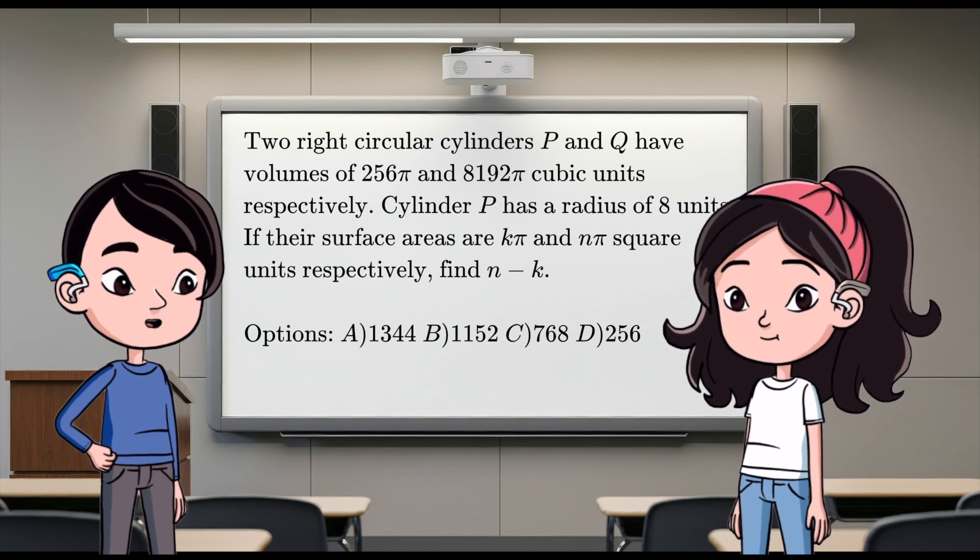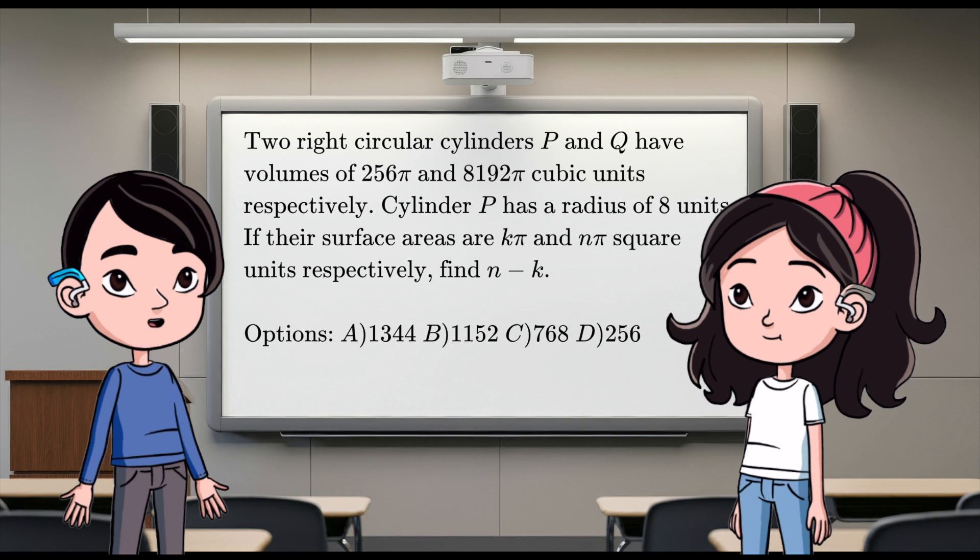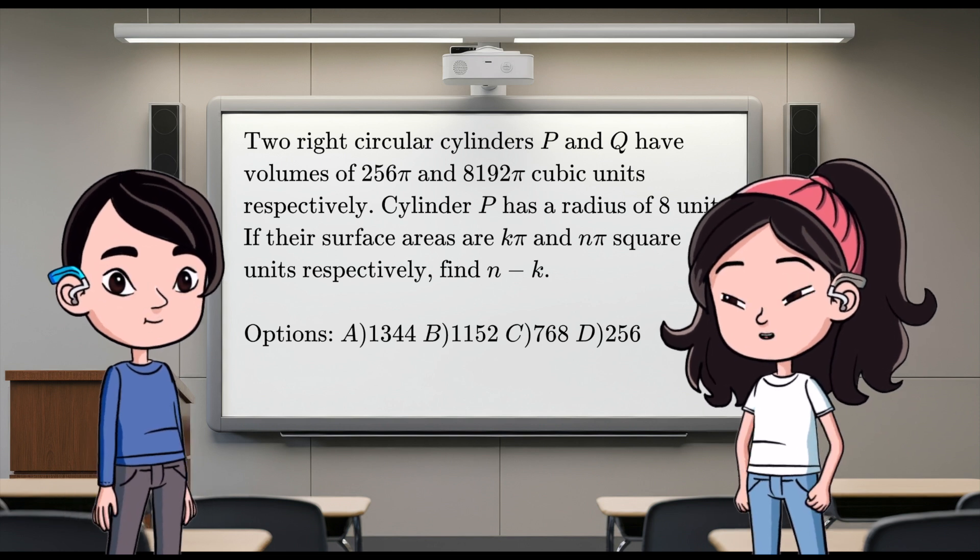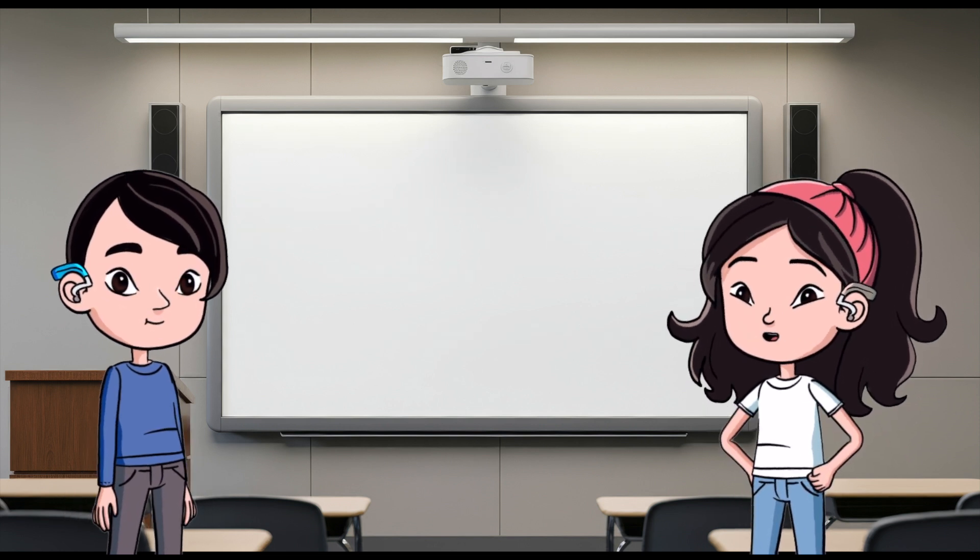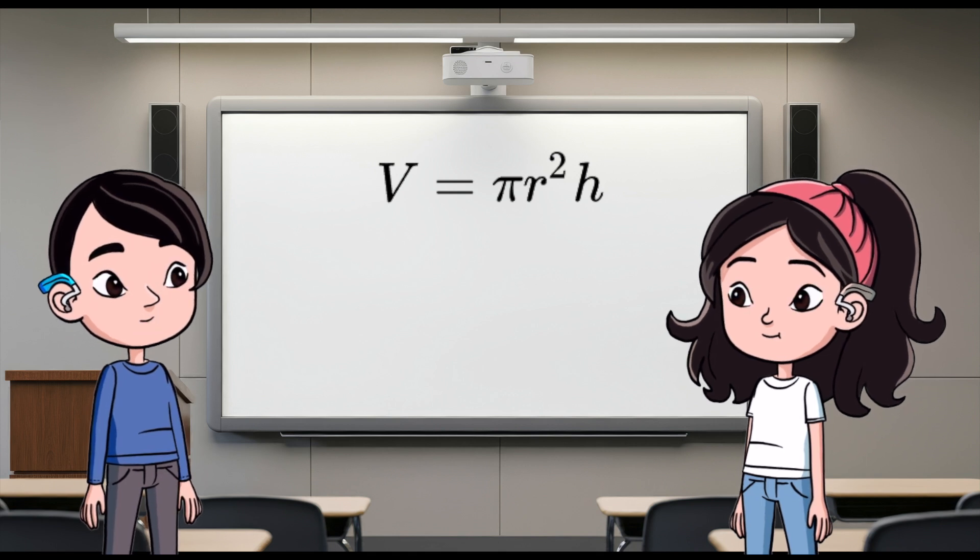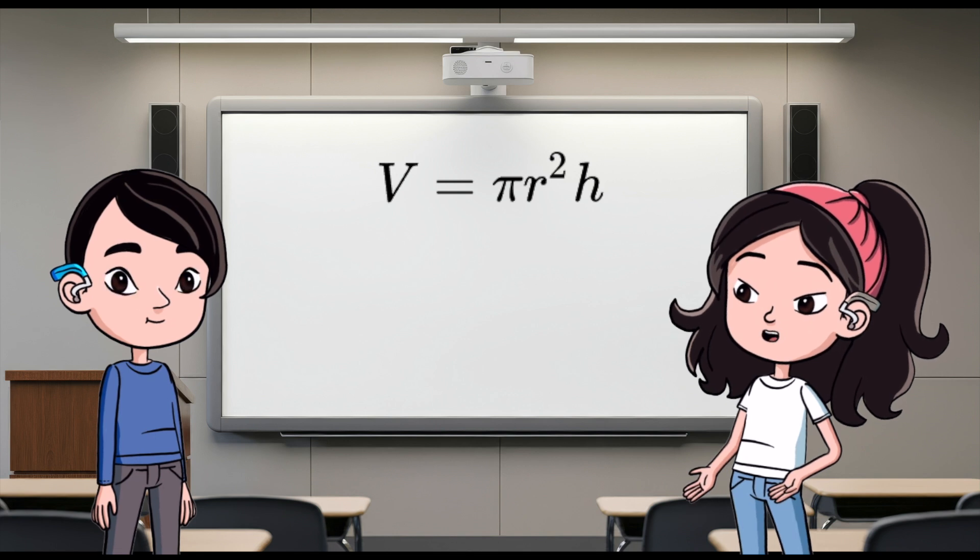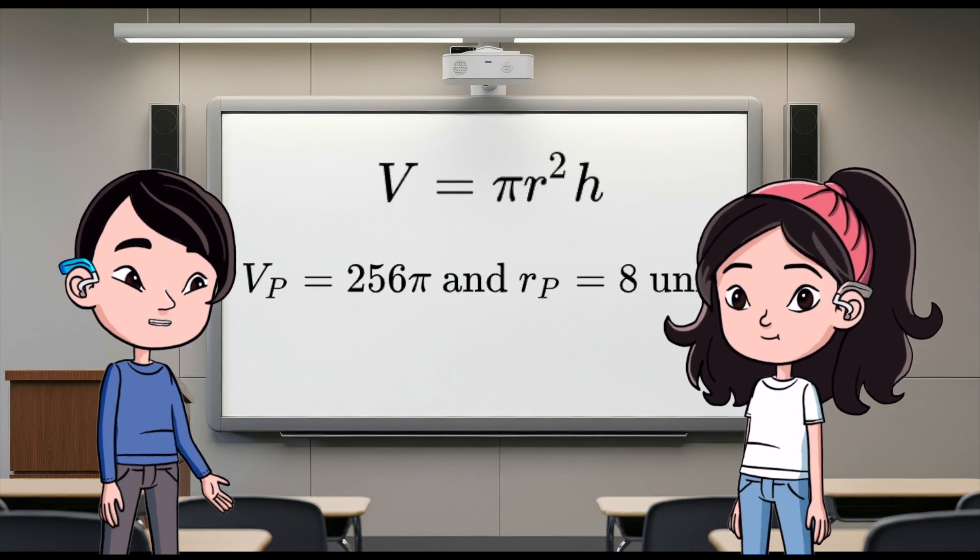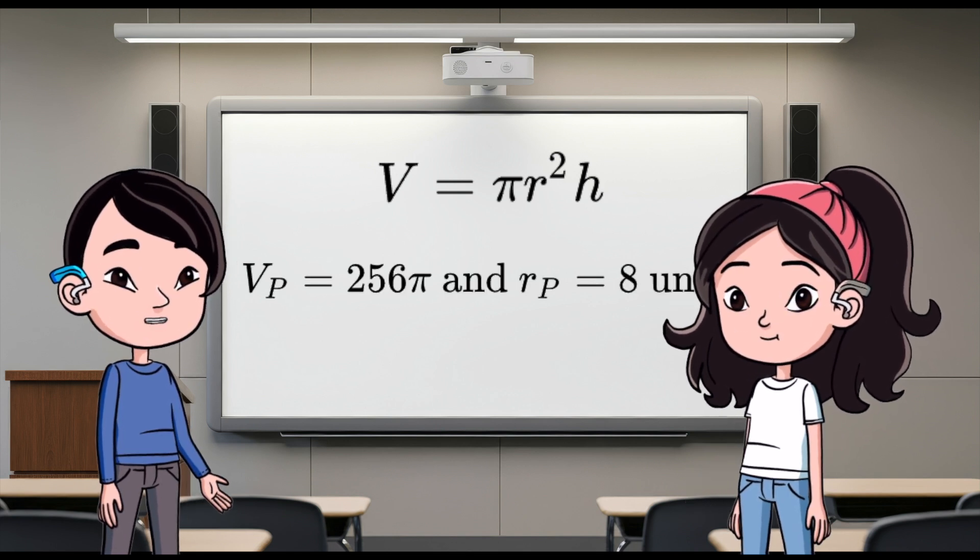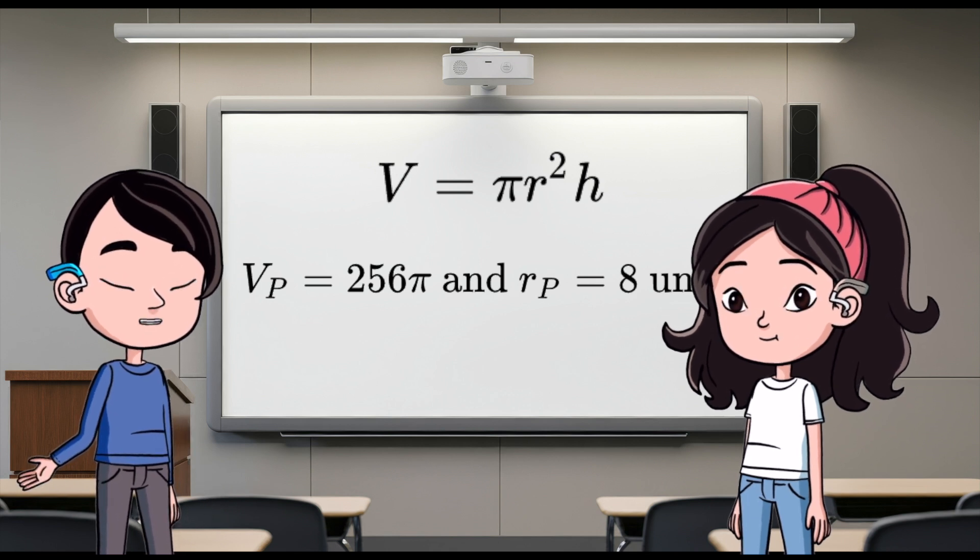Okay. If their surface areas are kπ and nπ square units respectively, we need to find the value of n minus k. Sounds like a whole adventure. Let's dive in. So, starting with cylinder P, we know the volume formula for a cylinder is V equals πr²h. Yup. V equals πr²h. Right. And we've got the volume V sub P equals 256π and the radius r sub P equals 8 units.